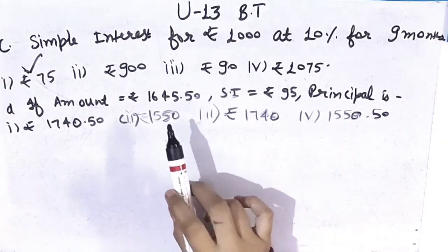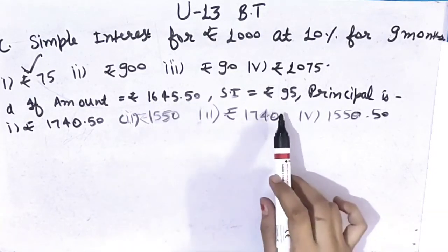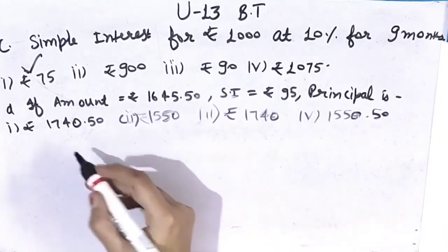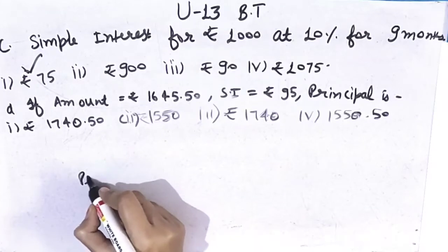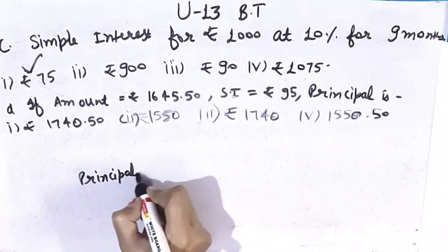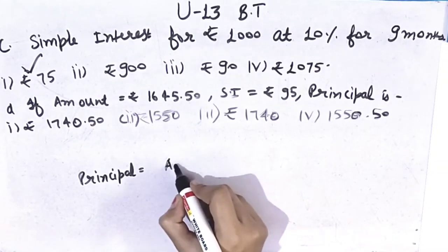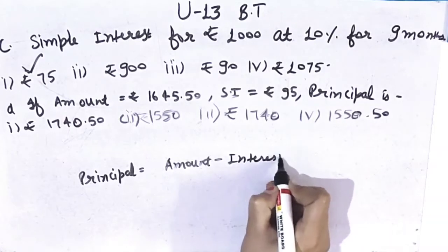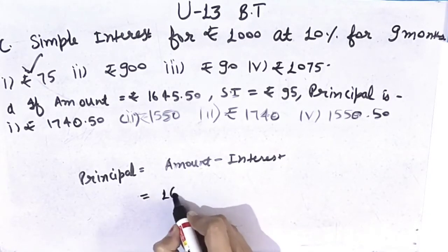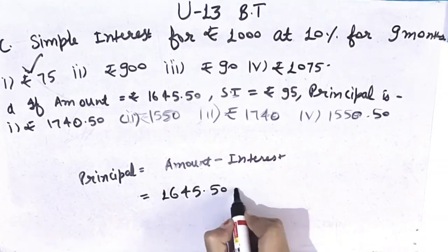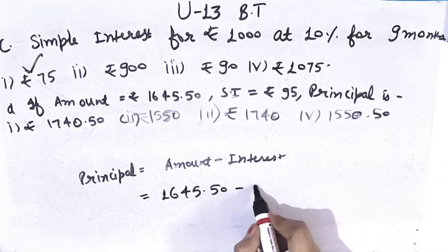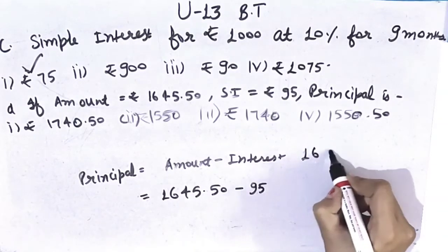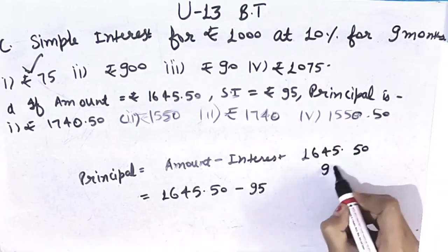Part (d): Amount is Rs.1,645 and 50 paise. Interest given is Rs.95. You have to find the principal. Formula of principal is: principal equals amount minus interest. Amount given is Rs.1,645 and 50 paise. Simple interest given is Rs.95. Now subtract: from 1,645.50 we cut 95.